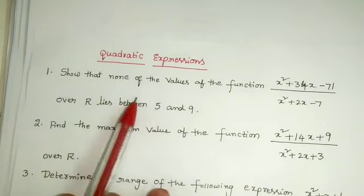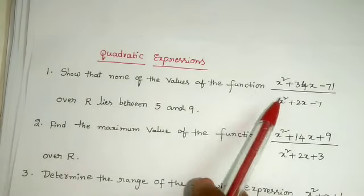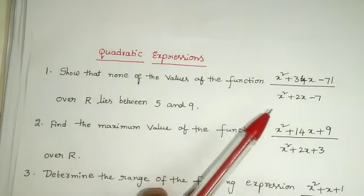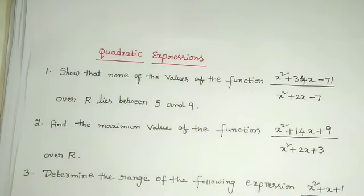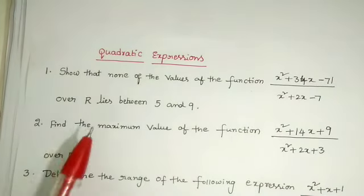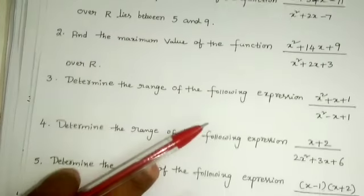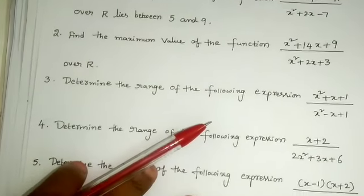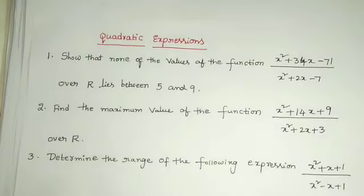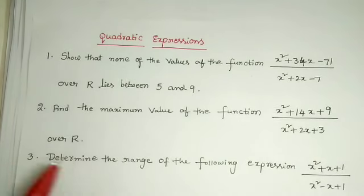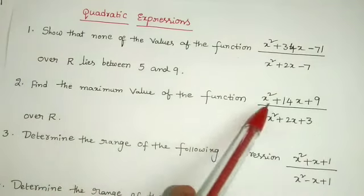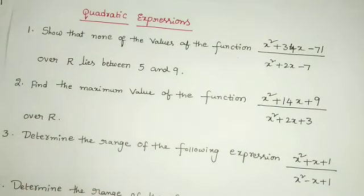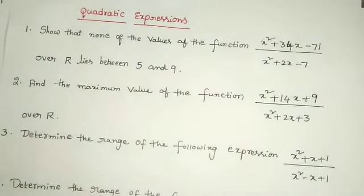First one: show that none of the values of the function x squared plus 34x minus 71 by x squared plus 2x minus 7 over R lies between 5 and 9. I am giving only 11 questions here, and 10 of these questions are of the same model — very very important. Next: find the maximum value of the function x squared plus 14x plus 9 by x squared plus 2x plus 3 over R.